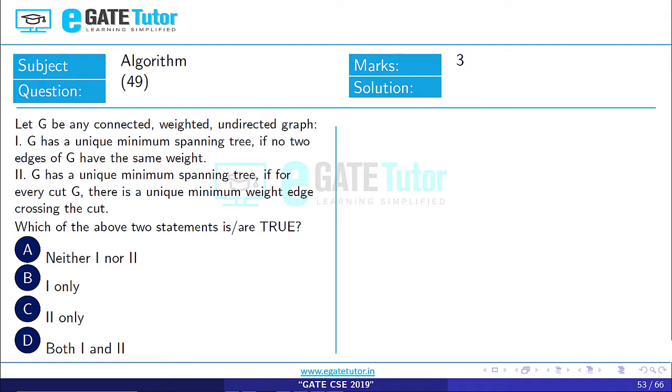Statement 2: G has a unique minimum spanning tree if for every cut G there is a unique minimum weight edge crossing the cut. Which of the following two statements are true?